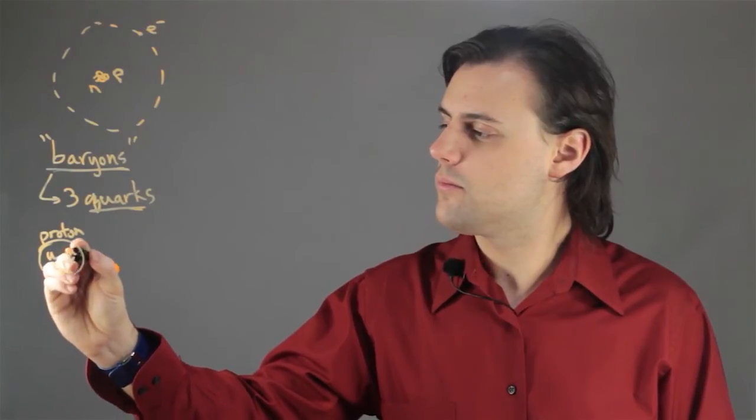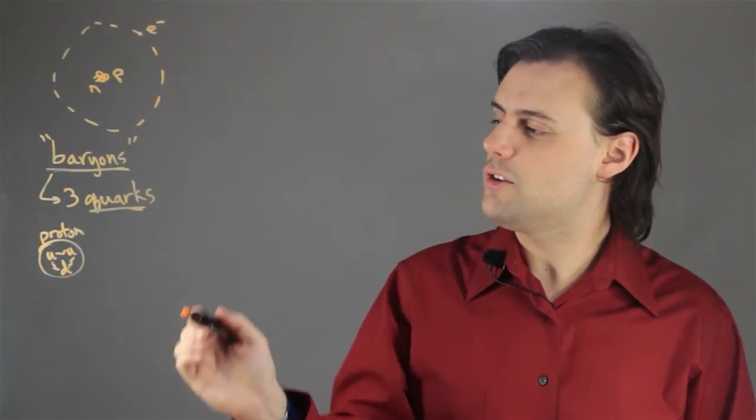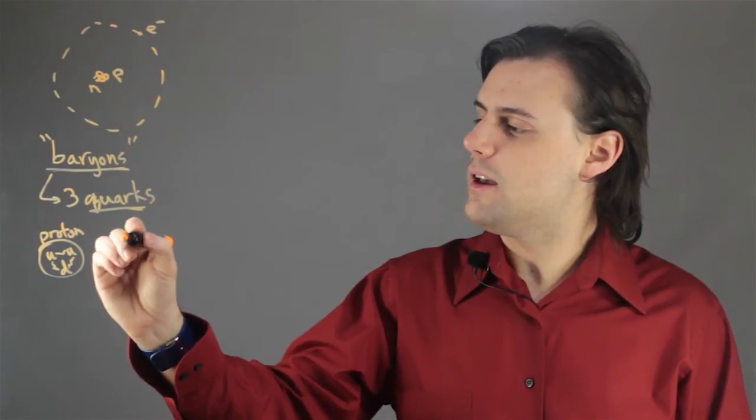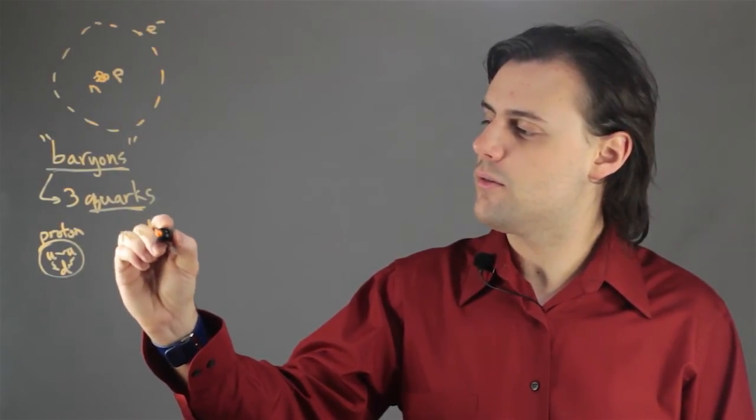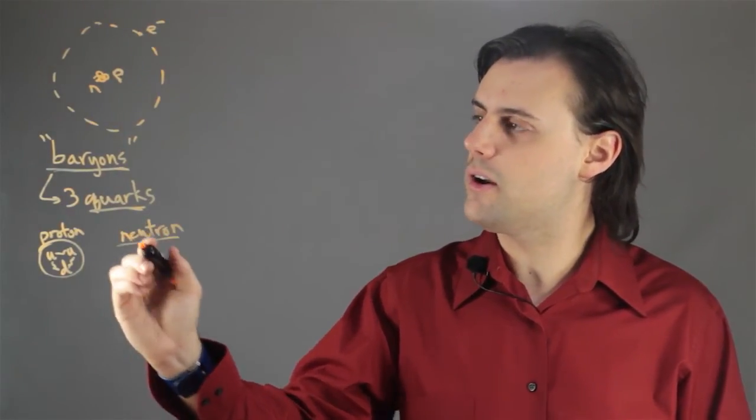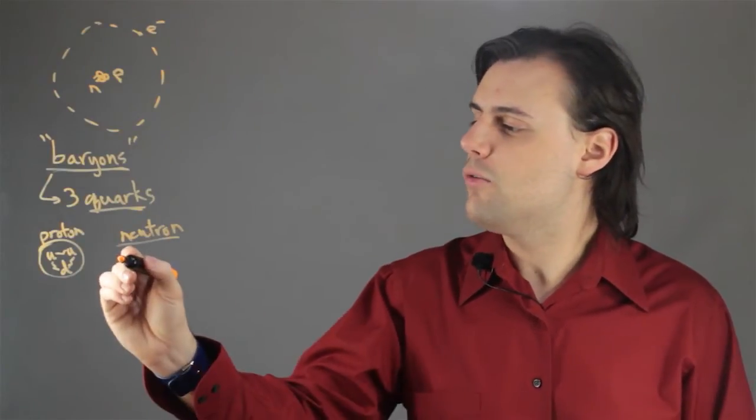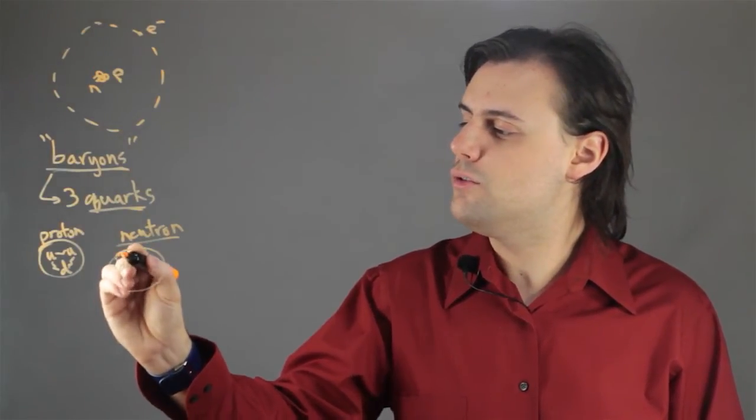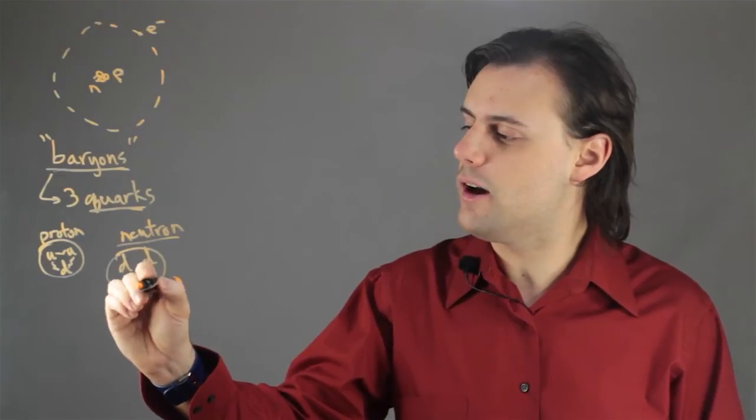A neutron, which is the other type of baryon that is found in normal matter, will be made up of two down quarks and one up quark.